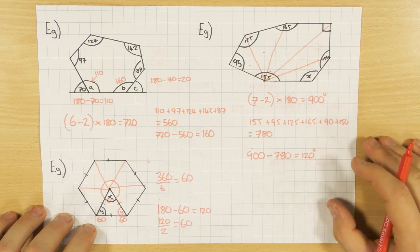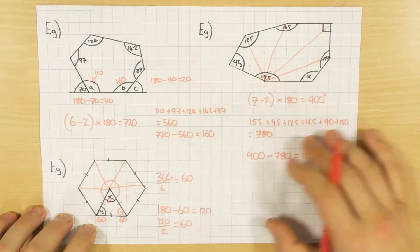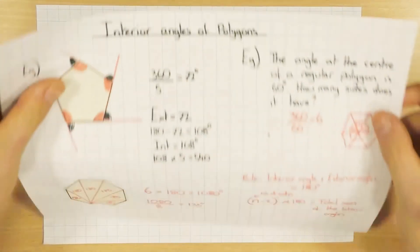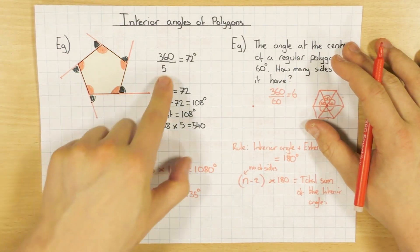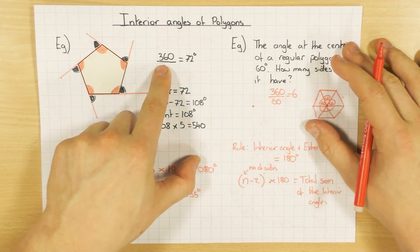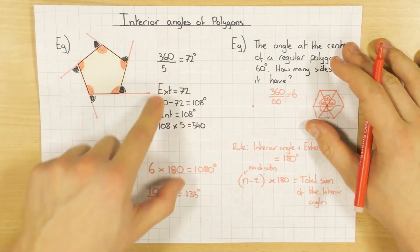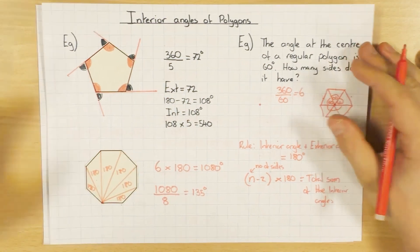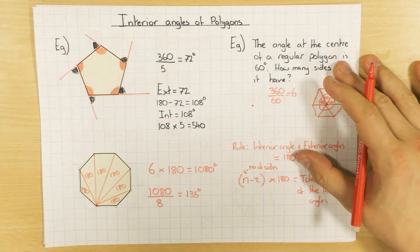So there are different ways you can work out interior angles: use the (n − 2) × 180 formula for any polygon, or for regular polygons you can also use the fact that exterior angles add up to 360, work out the exterior angle, and then find the interior angle from that. Hopefully that helps — cheers, guys.